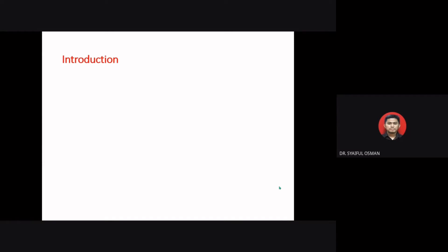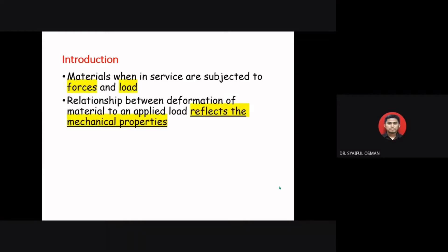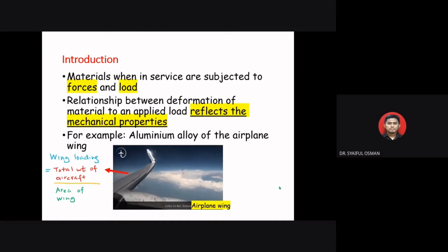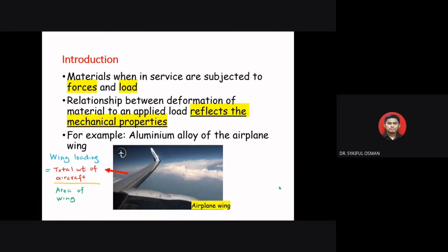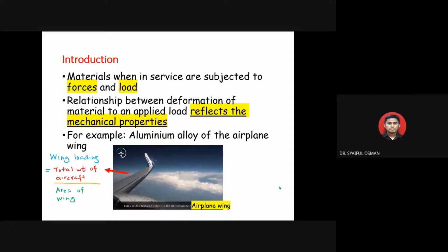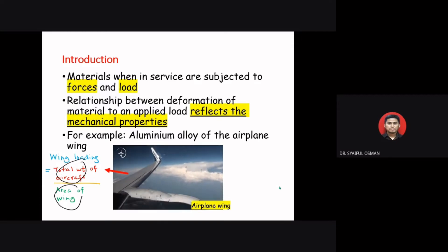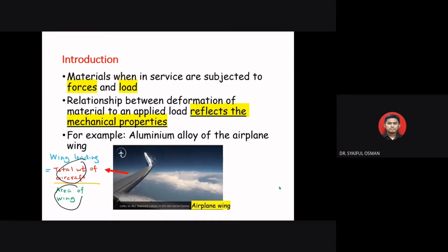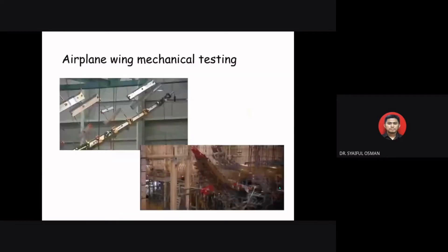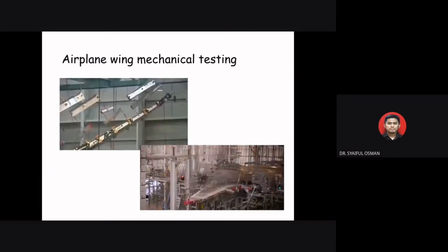Materials in service are subjected to forces and loading, and the relationship between the deformation of the material and the applied loading reflects the mechanical properties of the material. For example, the wing loading experienced by an airplane wing equals the total weight of the aircraft divided by the area of the wing. It is important to know the characteristics of the material and carefully design the end product so that deformation will not be excessive and fracture will not happen.